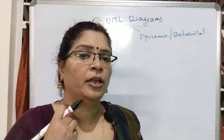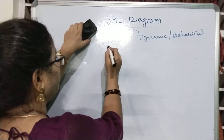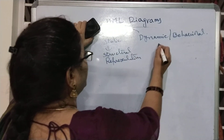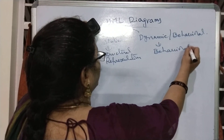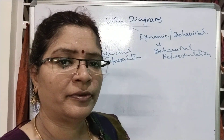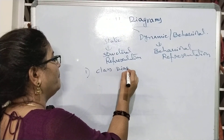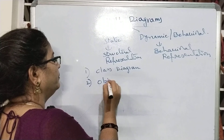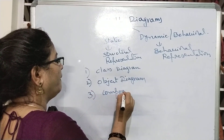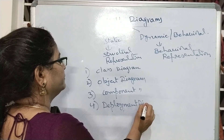Static means structural things — it only shows static things, no dynamic changing, no ongoing processes. Static means only structural representation. Dynamic means it represents behavioral things — behavioral representation. The diagrams that come under static are: first, class diagram and object diagram; then component diagram and deployment diagram.